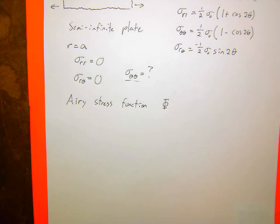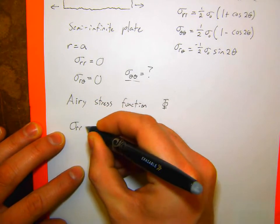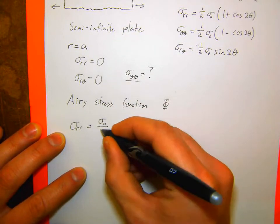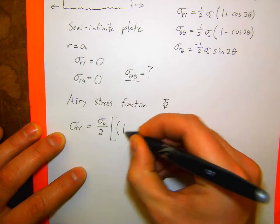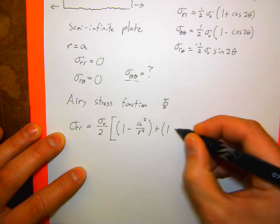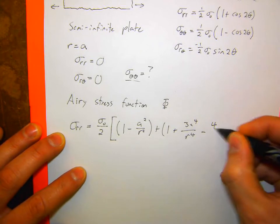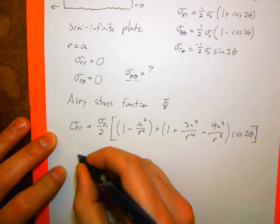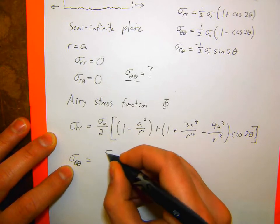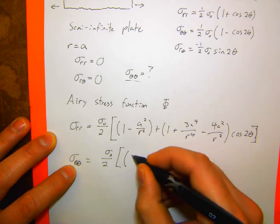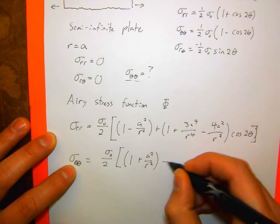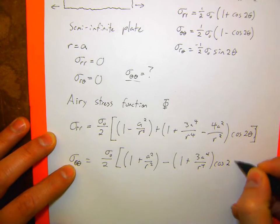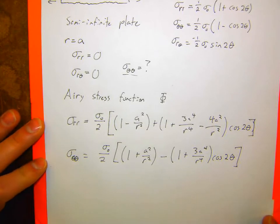The full field solution is: sigma_rr = (sigma_naught/2)(1 − a²/r²) + (sigma_naught/2)(1 + 3a⁴/r⁴ − 4a²/r²)cos 2θ, and sigma_theta_theta = (sigma_naught/2)(1 + a²/r²) − (sigma_naught/2)(1 + 3a⁴/r⁴)cos 2θ. There's also an r-theta term, but that one doesn't matter as much so I'm not going to write it out.